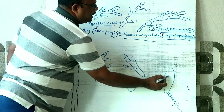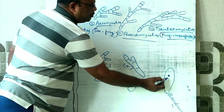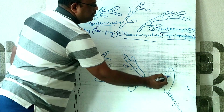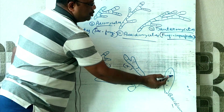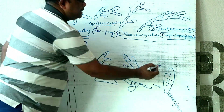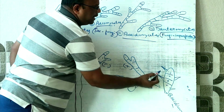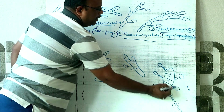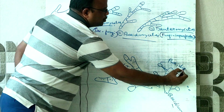The basidium contains a diploid nucleus. The diploid nucleus undergoes meiosis division to produce haploid nuclei. The basidium develops finger-like projections called sterigmata, and on these sterigmata the basidiospores are formed.